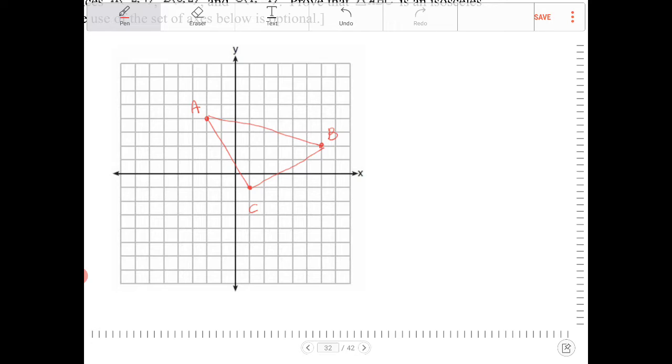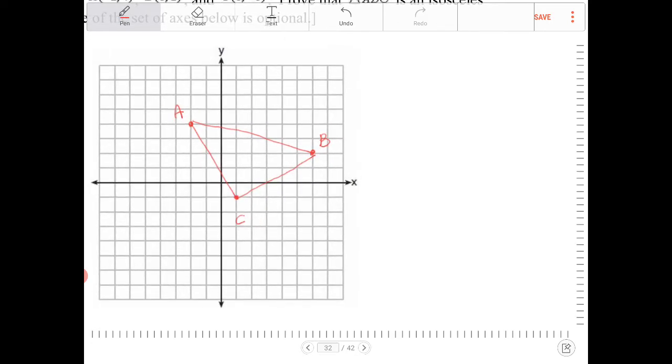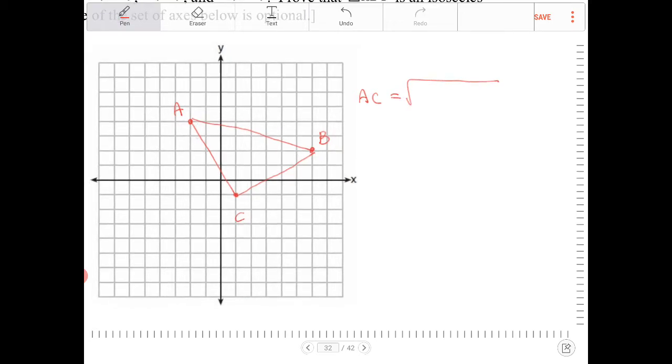So AC, let's see here. The side length of AC is equal to the square root of... So going from A to C, I'm going to go down 5 and over 3. So 5 squared plus 3 squared. This is Pythagorean theorem. And that would be 25 plus 9, which is 34, so square root of 34. This is side length AC.